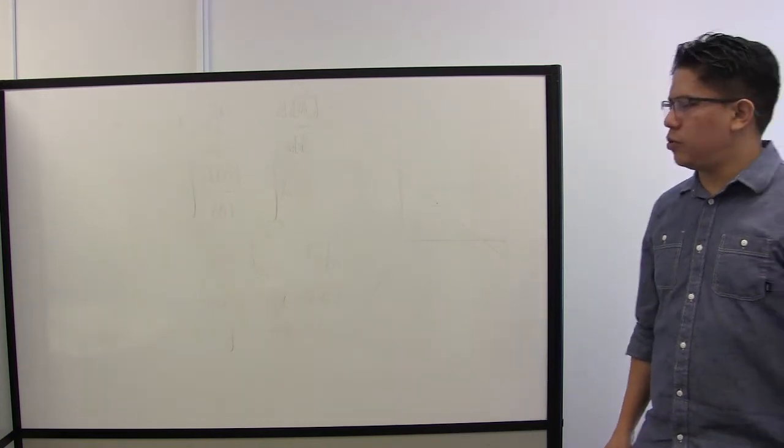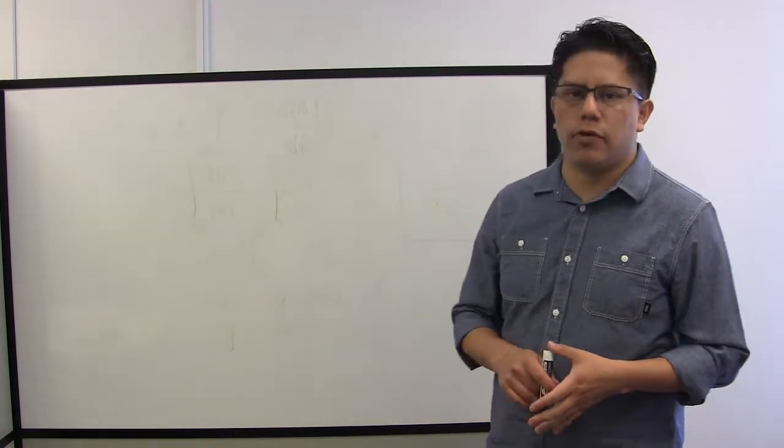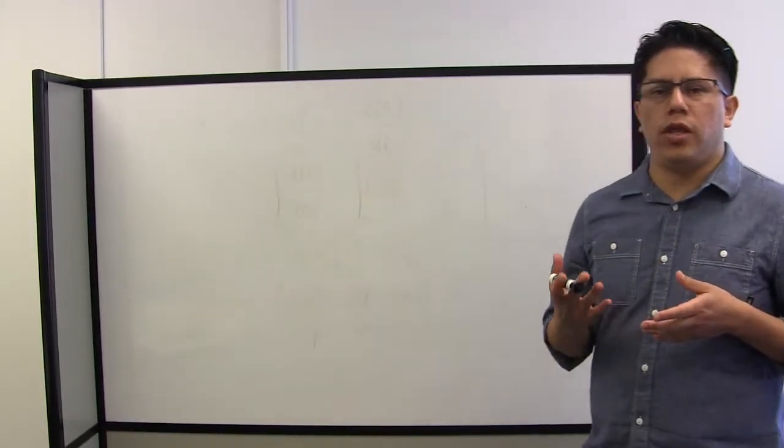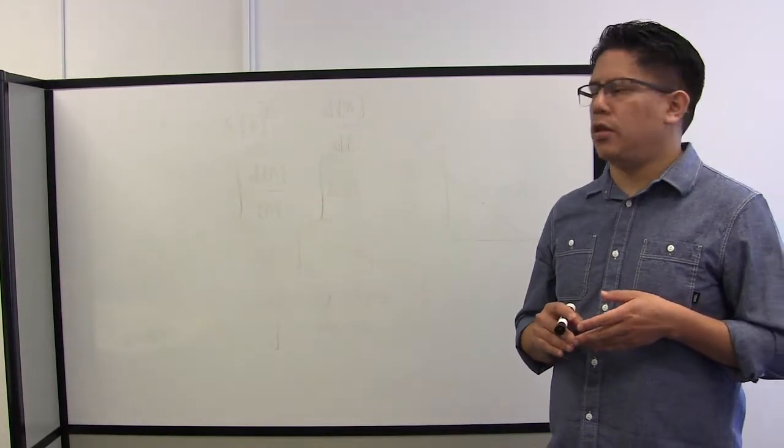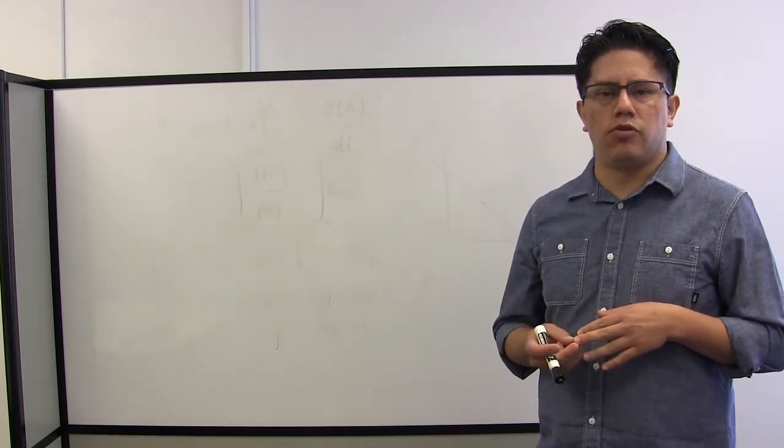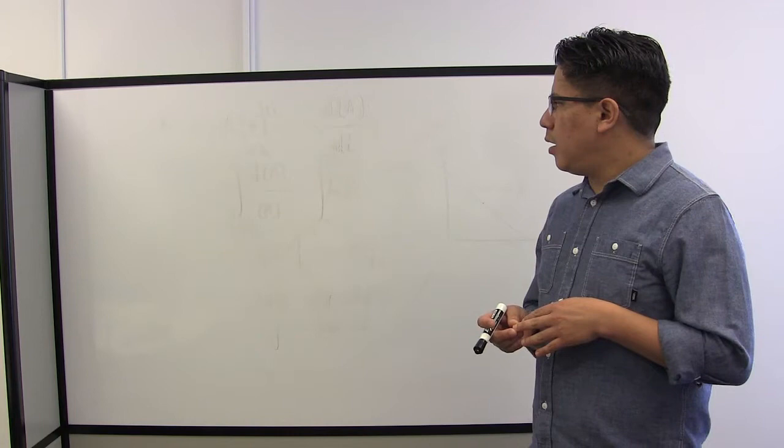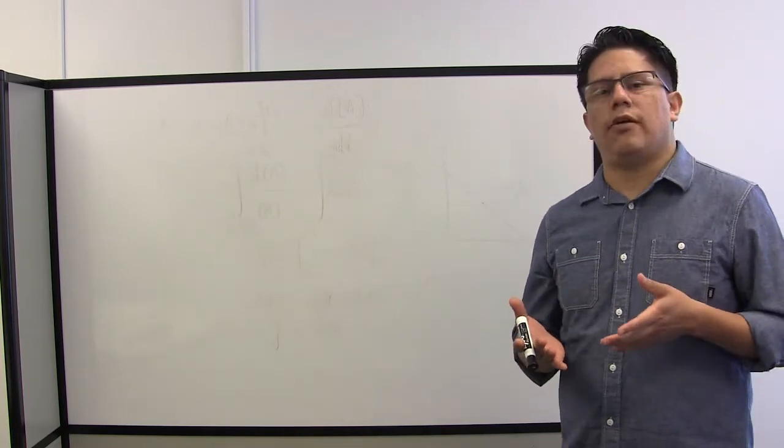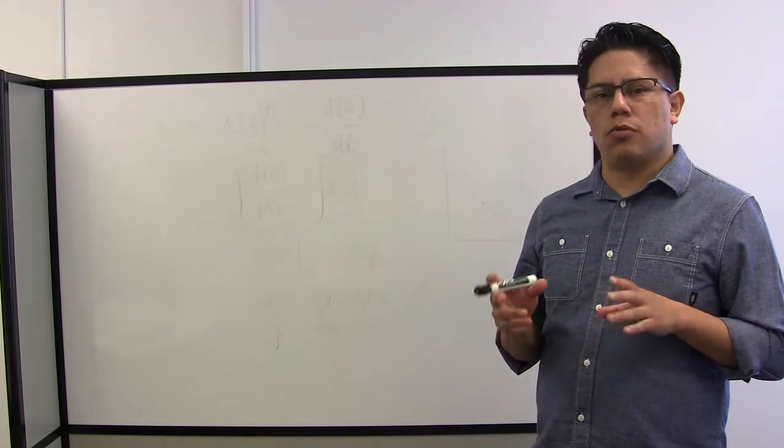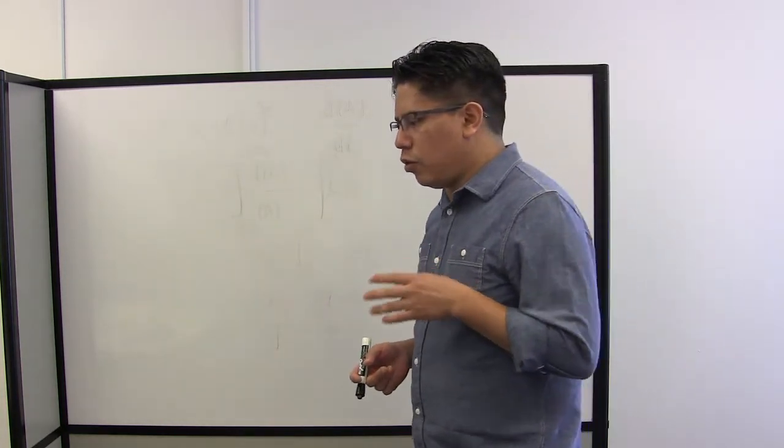Hello everybody, welcome to this class for environmental engineering laboratory. Today we're going to work on Lab 2D, which is measuring the residual disinfectant in the distribution system for drinking water. It is important to have some residual disinfectant in the water that's not being used because some opportunistic pathogens might grow and they could be harmful, specifically for immunocompromised people.